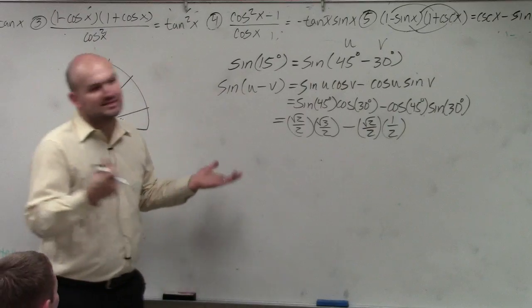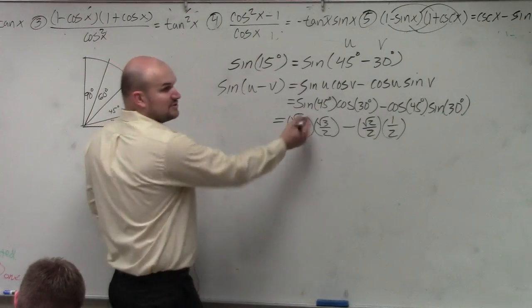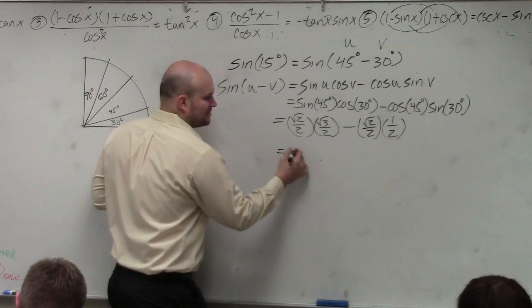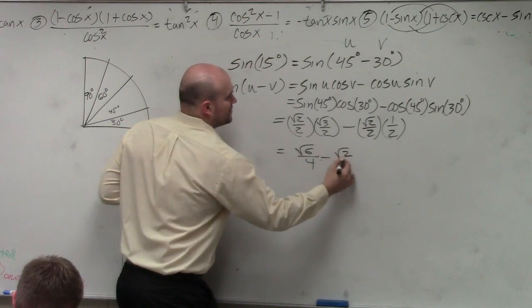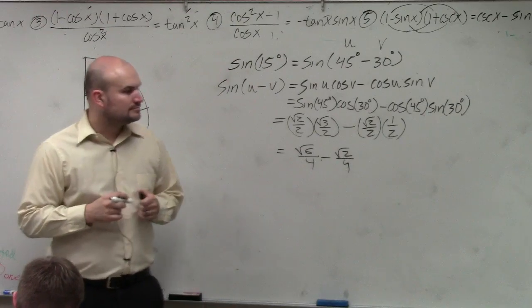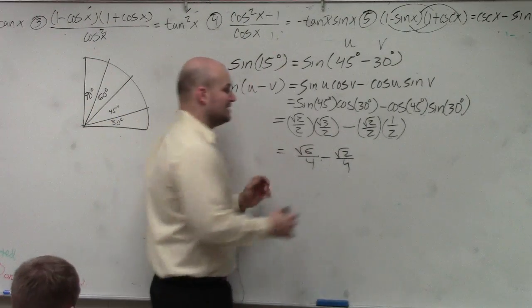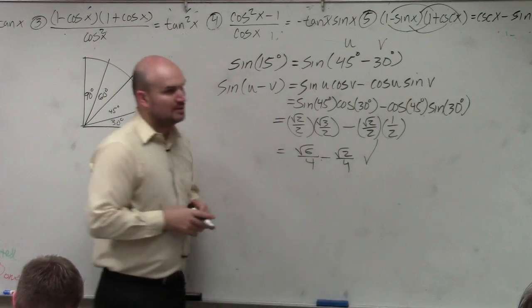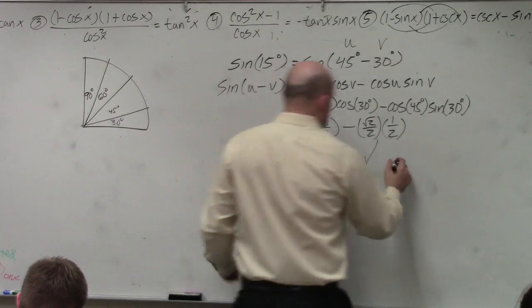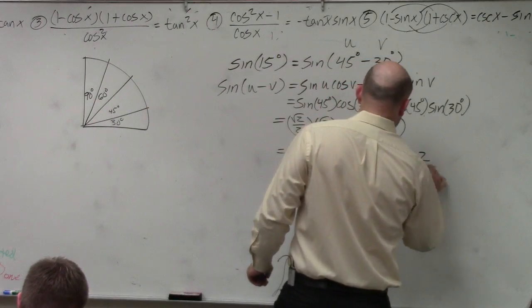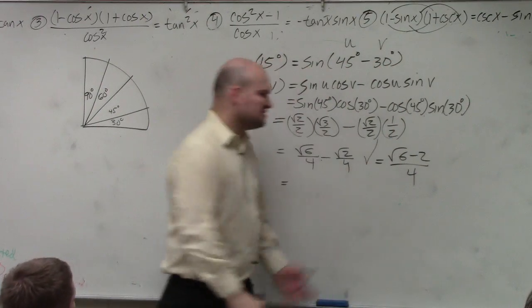That's not it, though, not yet. We've got to simplify. Square root of 2 times square root of 3. We're learning this in our Algebra 2 class. That's square root of 6 over 4 minus the square root of 2 over 4. OK? Now, that's the way that the book writes the answer. Actually, they write their answer like this: square root of 6 minus 2 over 4, which is fine.